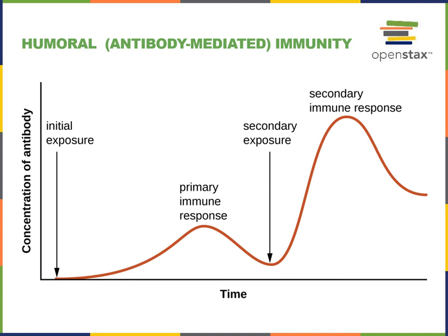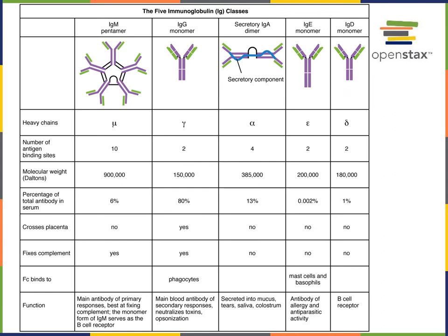Many plasma B cells will be produced to secrete antibodies. There are five major classes of antibodies, also known as immunoglobulins. The major classes of antibodies are IgM (immunoglobulin M), IgG, IgA, IgE, and IgD.